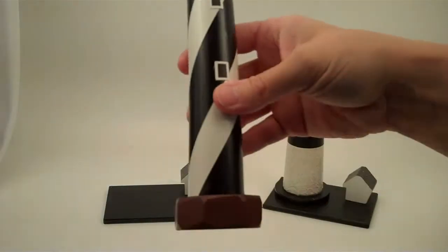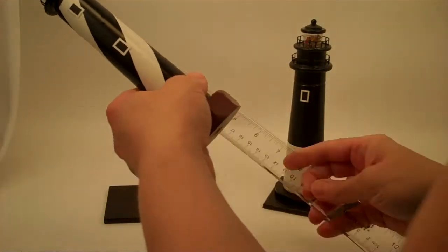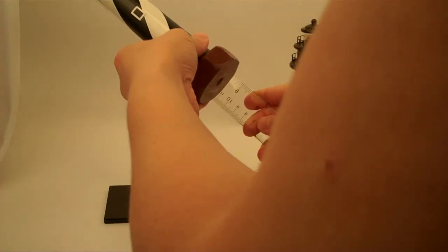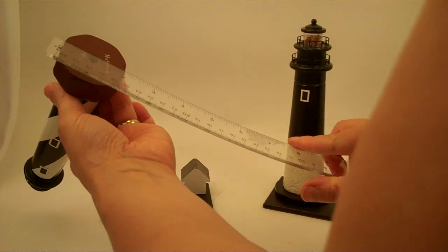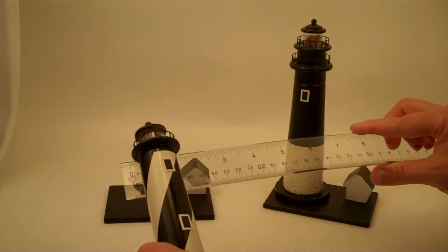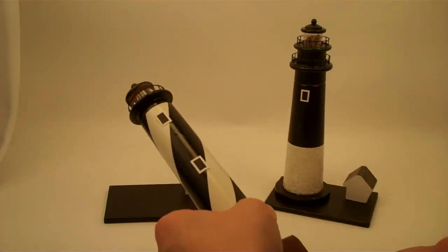So these lighthouse kaleidoscopes have an overall height of just over seven and a half inches, about seven and three-quarters, a diameter across the base of two inches, and a diameter at the widest point of an inch and a half at the lens area.